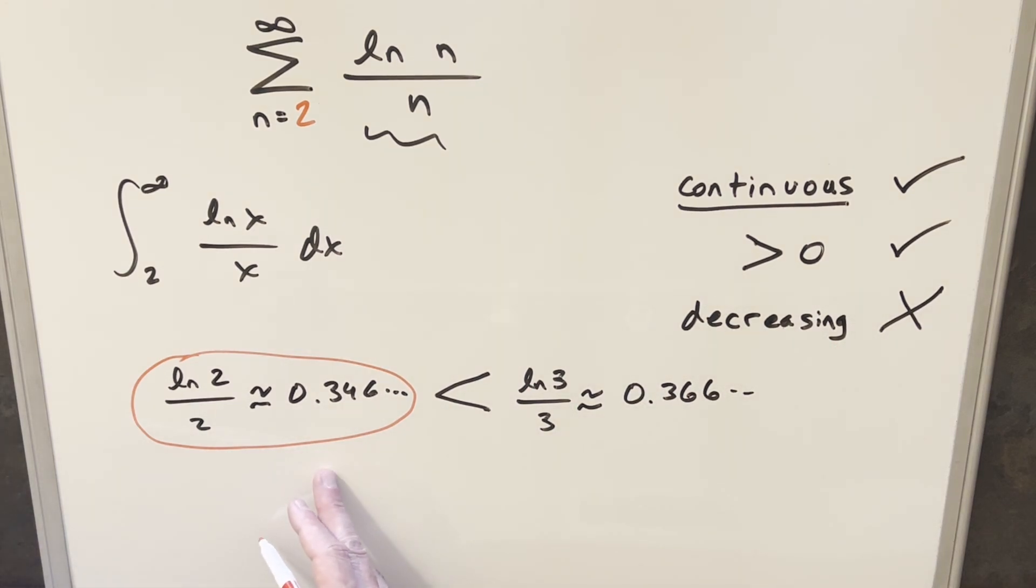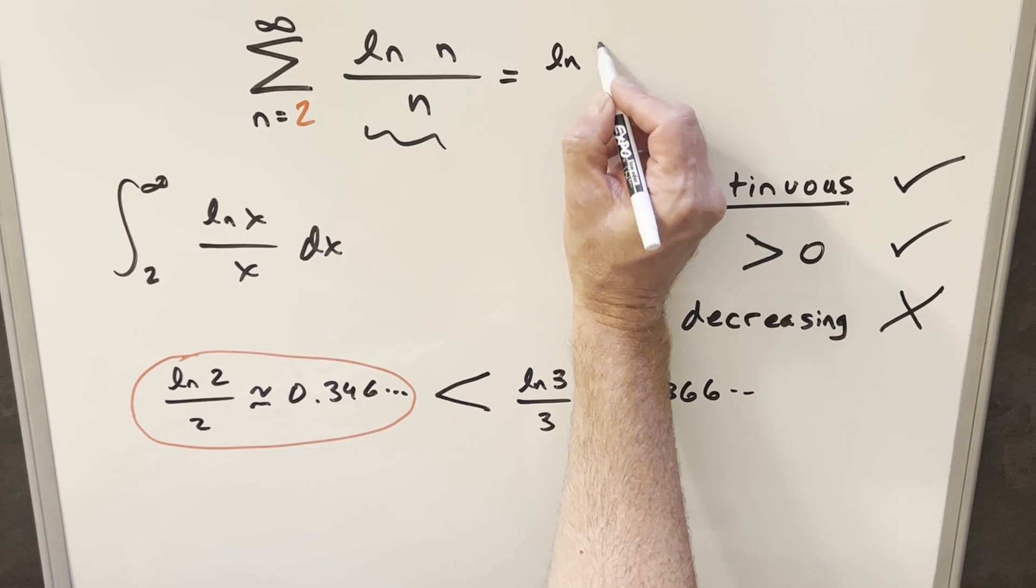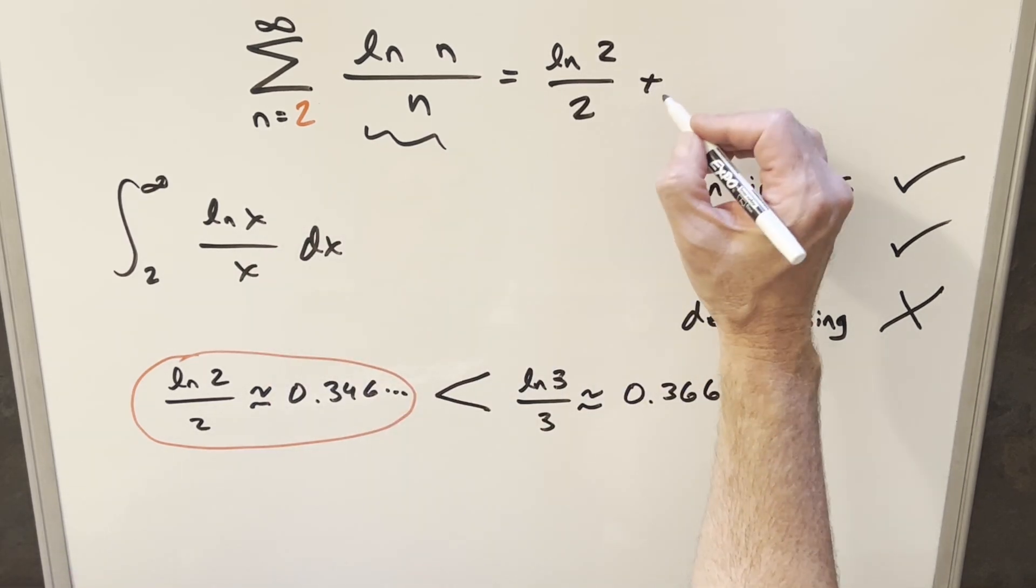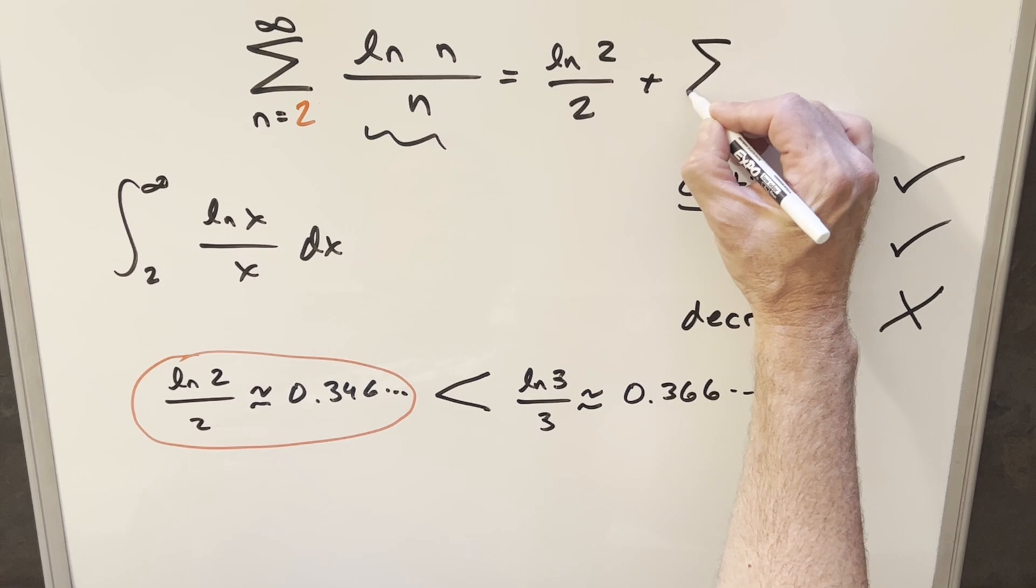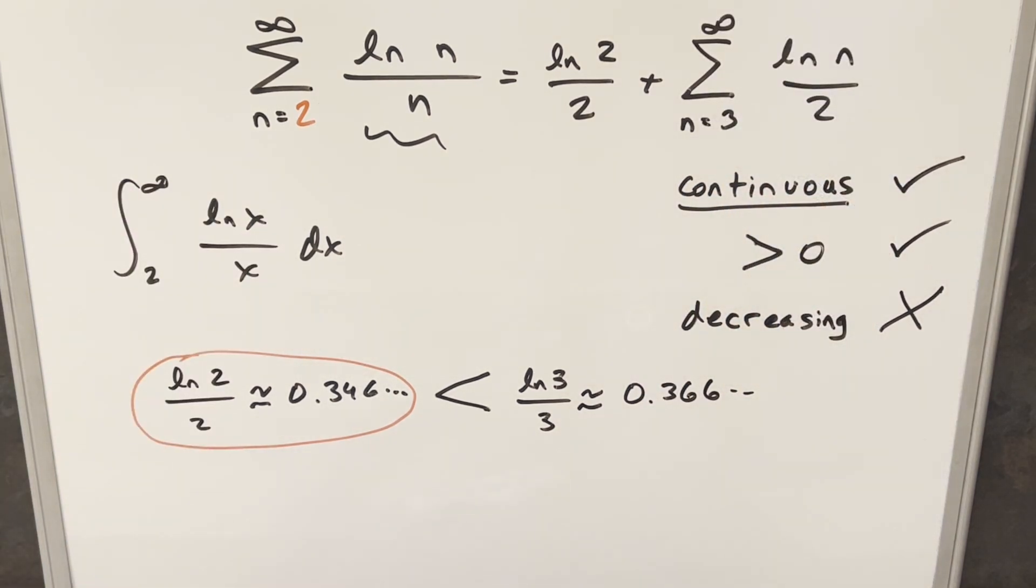And if we want to be precise about it, all we need to do is just strip out one value, like our n equals 2 value. I can write this as just that first value, strip that out. And then our series is just going to become the same thing. But now we're going to just start it at 3 instead of 2. And so doing it this way,